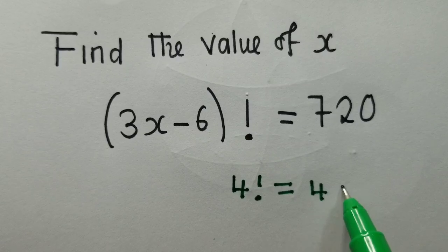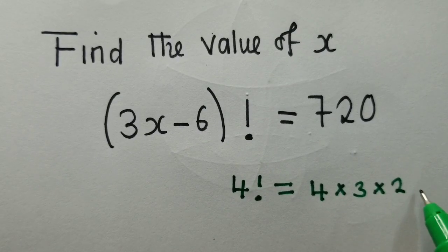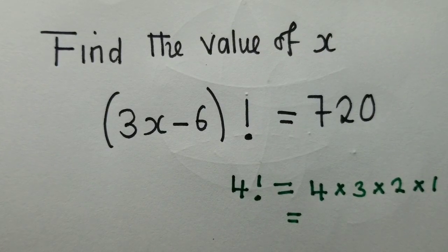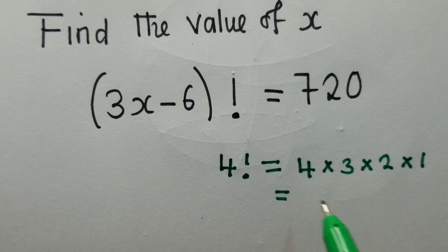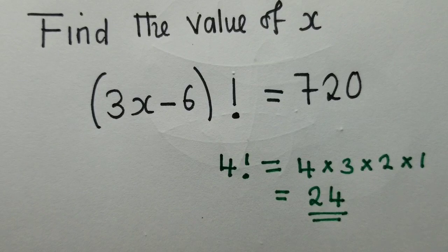And what answer are we getting when we say 4 factorial? We are simply going to say 4 times 3 times 2 times 1, which is giving us 24. That is 4 factorial.